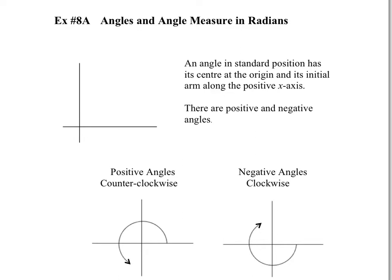An angle in standard position has its center at the origin. The origin is right here, where the y and x-axis meet. And its initial arm along the positive x-axis. So this line right here, that's the initial arm. The angle will always start from the positive x-axis.